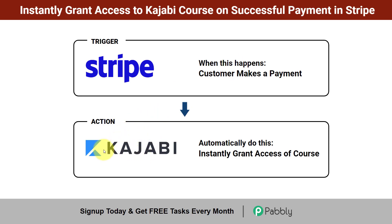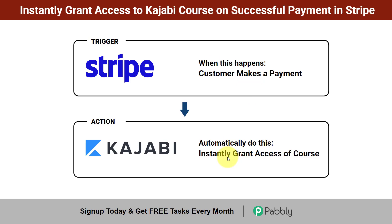You can either manually provide access to your course for each customer making a payment in Stripe, or you can create an automation between Stripe and Kajabi so that whenever a customer makes a payment, access is instantly and automatically granted. If you want to automate this process, come with me and I will show you the process step by step.